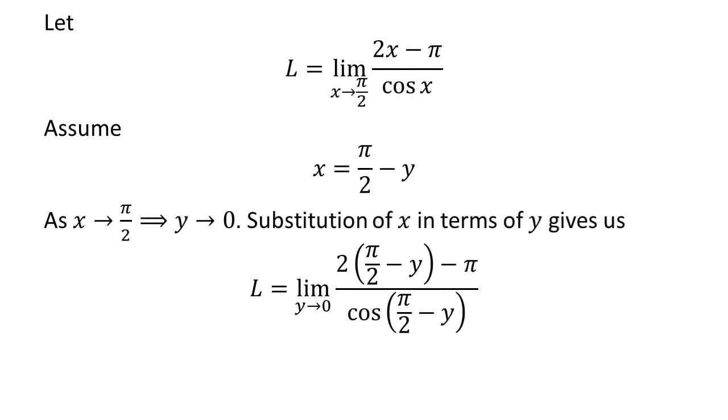Thus, the above statement implies x approaches π/2, then y approaches 0. Substitution of x in terms of y gives us L is equal to the limit of 2 times (π/2 minus y) minus π upon cosine of (π/2 minus y) as y approaches 0.